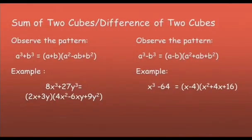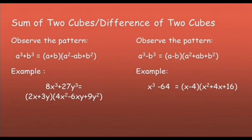Sum of two cubes and difference of two cubes. Let us observe the pattern. For the sum of two cubes, we have a cubed plus b cubed. To get the first factor, a plus b, we get the cube root of the first term. The cube root of a cubed is a, because a times a times a is a cubed. And the cube root of b cubed is b. To get the second factor, square the first term of the first factor — so a times a gives a squared.